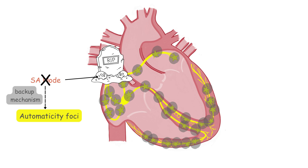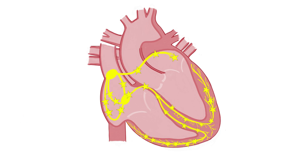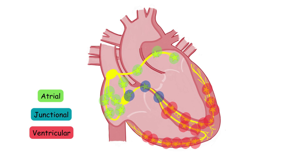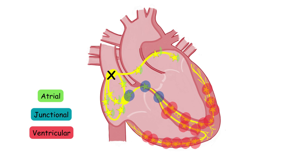There are three separate levels for this backup pacemaker mechanism: the atrial, the junctional, and the ventricular level. When the previously dominant leader stops working, another automaticity focus, no longer overdrive suppressed, wakes up from its dormant state to start pacing and to save the person's life. If the highest automaticity focus fails to work, an automaticity focus from the next highest level wakes up and starts to pace as dominant. So if the SA node fails to produce a stimulus, a focus below in the atria will wake up and take over the dominance.